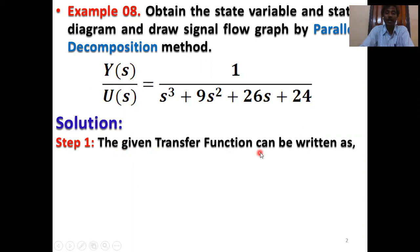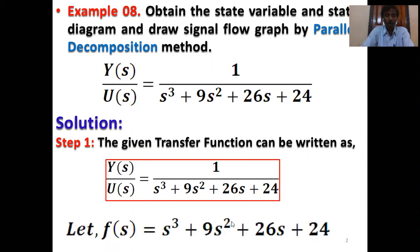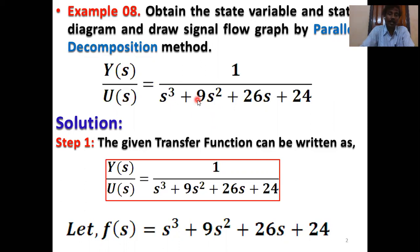The given transfer function is Y(s)/U(s) = 1 / (s³ + 9s² + 26s + 24). Put F(s) = s³ + 9s² + 26s + 24. By using parallel decomposition technique, we first calculate the state equation, then the state matrix, draw the state diagram, signal flow graph, and lastly the stability of the system. So F(s) equals the denominator: s³ + 9s² + 26s + 24.